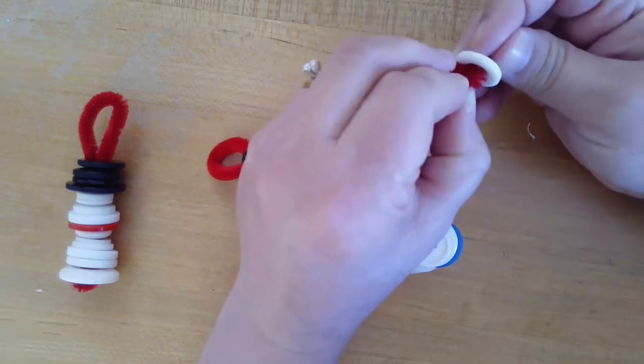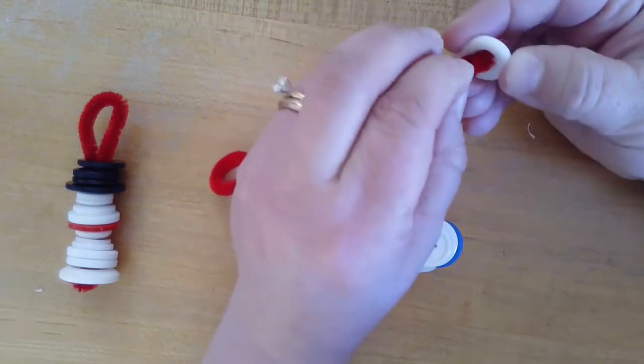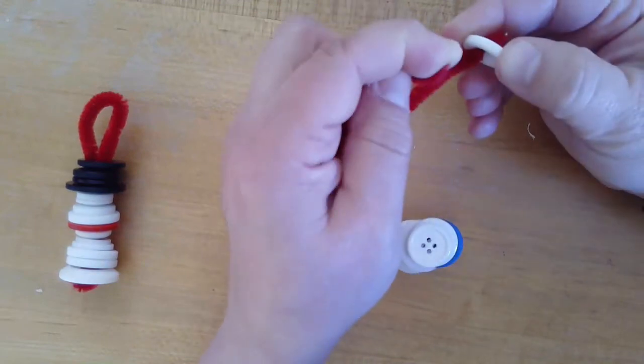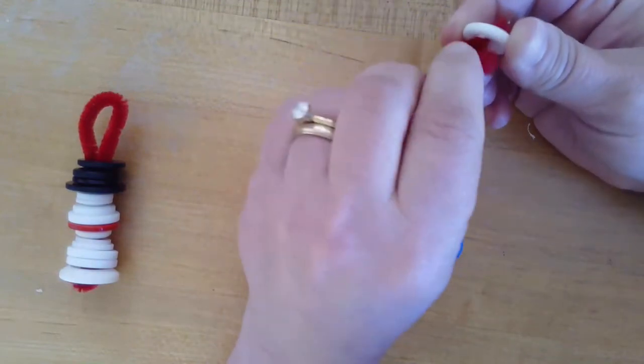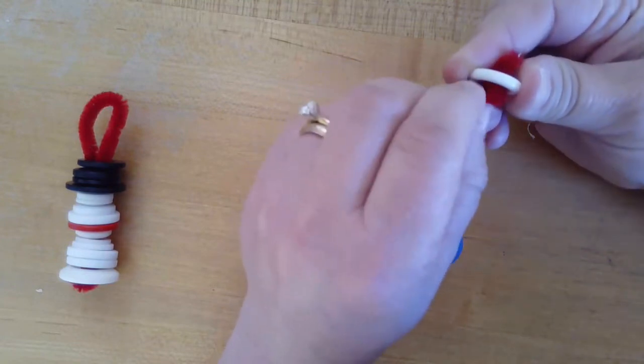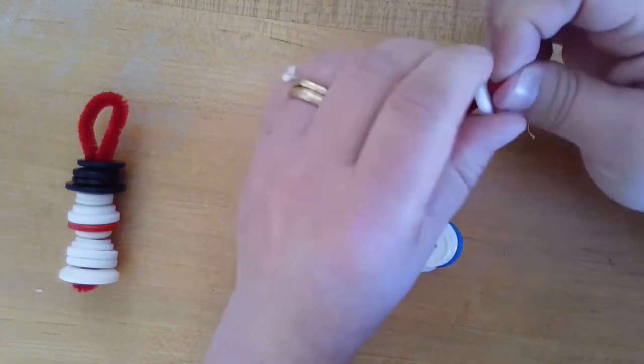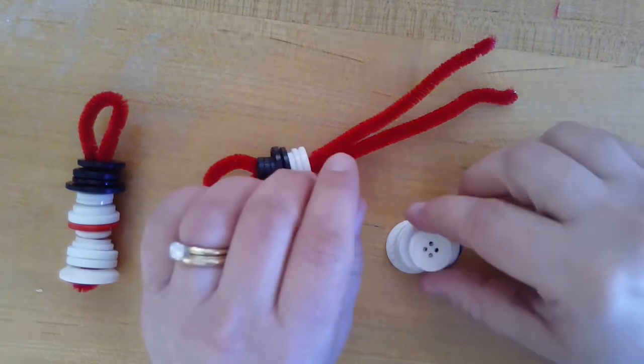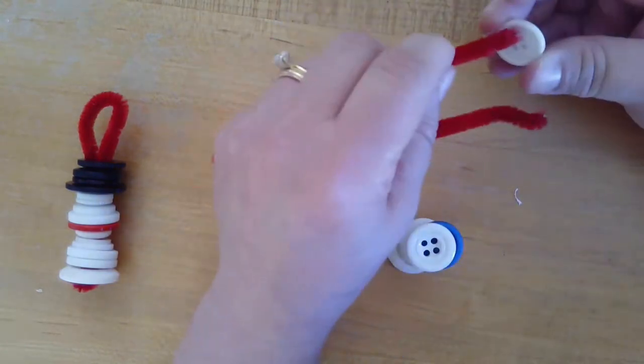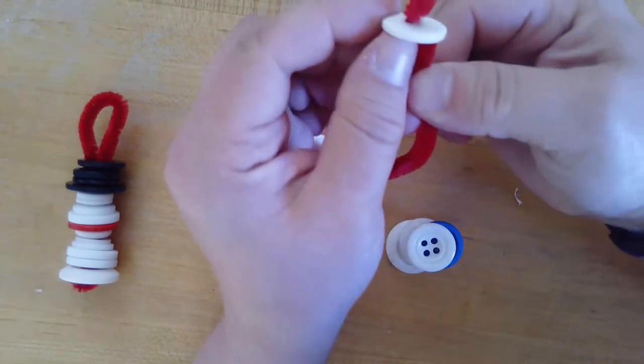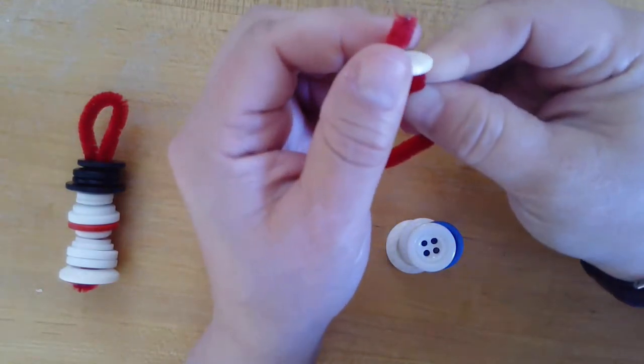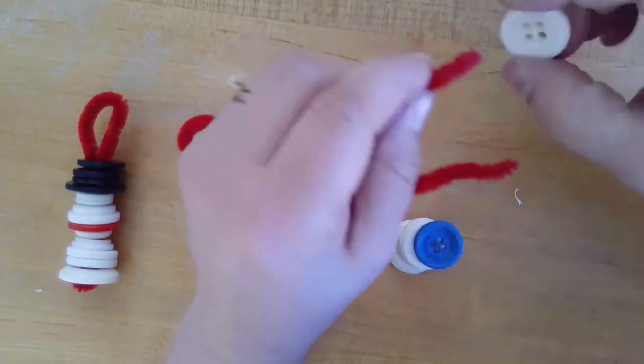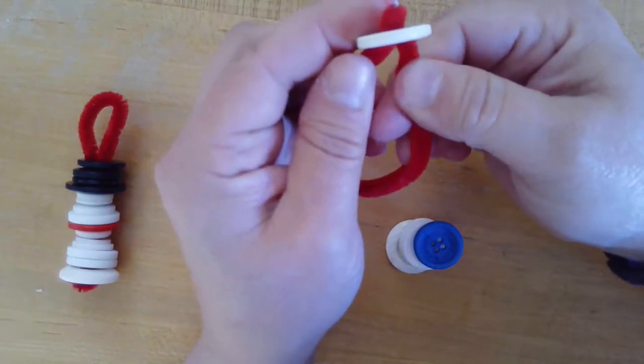As I said, it definitely gets easier the further you get along and the larger the button size. Be careful at this point - the pipe cleaner stems may get a little pokey at the end as the metal gets exposed from continual pressure going through the buttons.